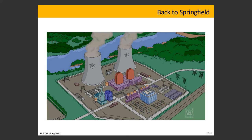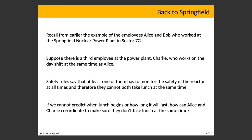We're going back to a nuclear power plant that may or may not be familiar from a TV show. We had Alice and Bob working in Sector 7G. Let's imagine a third employee, Charlie, who works on the day shift at the same time as Alice.